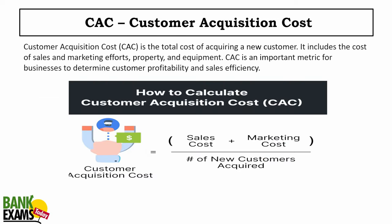CAC — customer acquisition cost — is the cost of acquiring a new customer. The formula is: sales and marketing cost divided by total number of new customers acquired. To acquire one customer, how much money you need to spend — that is customer acquisition cost.